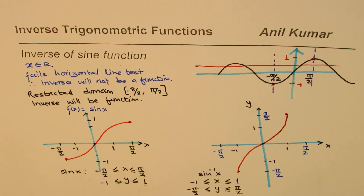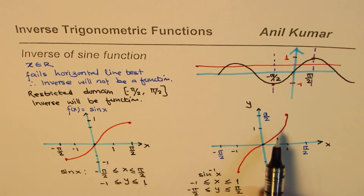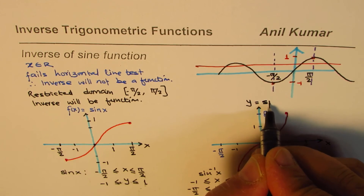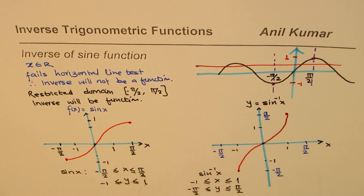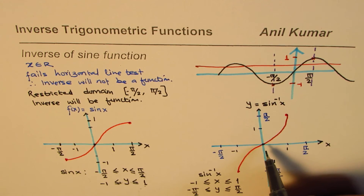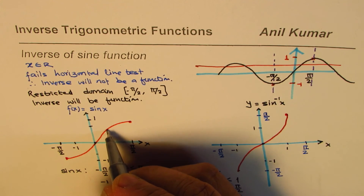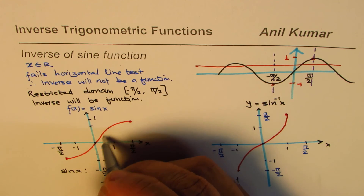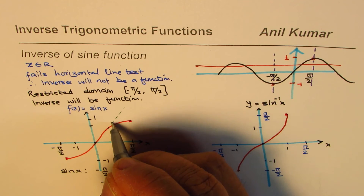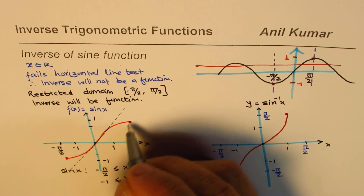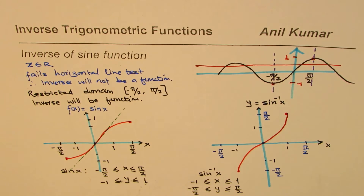I hope with this you understand how sine x and sine inverse x are related. This is y equals sine inverse x. You could have also obtained the sketch by reflecting over the line y equals x — if you draw the line y equals x and then reflect the restricted sine curve over it, you will get this inverse curve. That was another way of doing it using the graph.